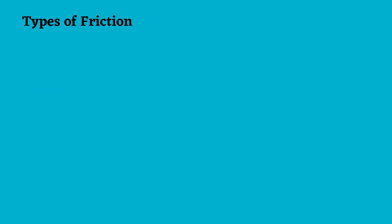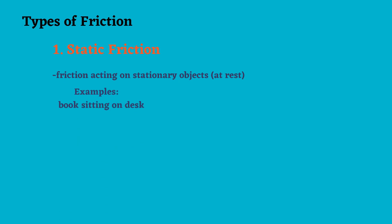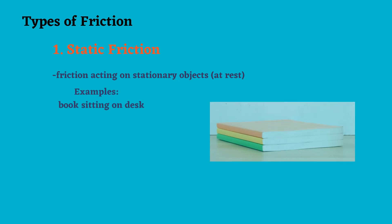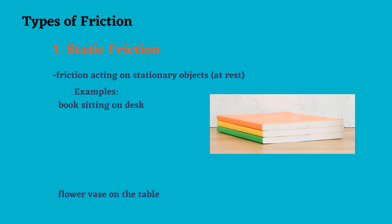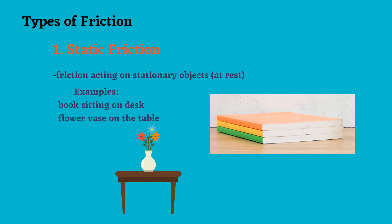There are four types of friction. First is what we call static friction — the friction acting on stationary objects or objects at rest. Examples: books sitting on a desk and a flower vase on the table. Take note that when we say static friction, the force acting on the object is balanced, that's why there is no movement or motion.